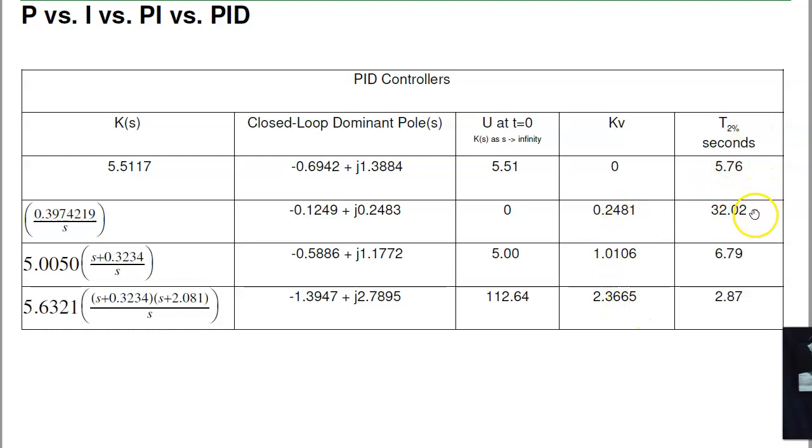The settling time, the integrator made the system a lot slower. PI is almost the same as the original system, but now it's type 1. I essentially took that pole at 0.32 and slid it into the origin. Slows you down a little bit, but not a whole lot. And makes it type 1. And PID is better tracking, much faster, if you can implement it.